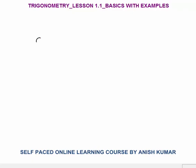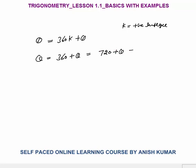Any angle theta and 360k plus theta are the same angle, where K is a positive integer. For example, theta is the same as 360 plus theta, or 720 plus theta if K is 2, 1080 plus theta if K is 3, 1440 plus theta if K is 4, and so on. Because after a 360 degree rotation, the angle theta and 360 plus theta become the same. Same way 720 plus theta, 1080 plus theta — they are the same angles.